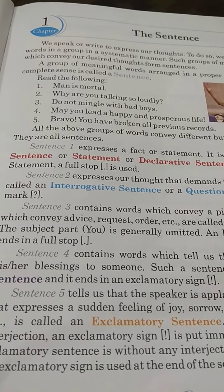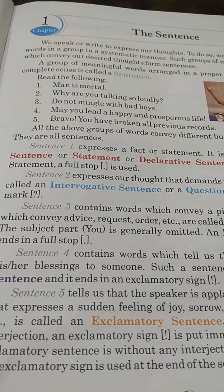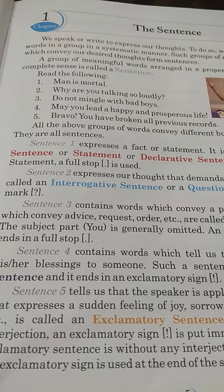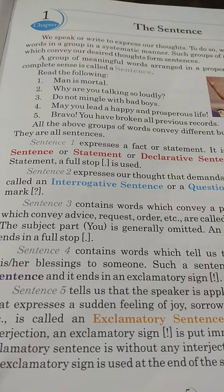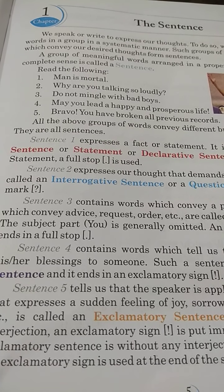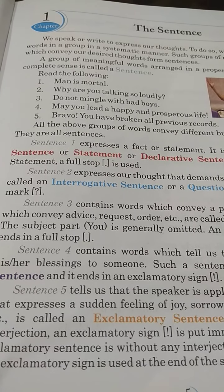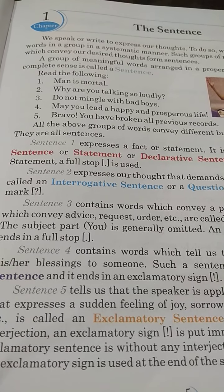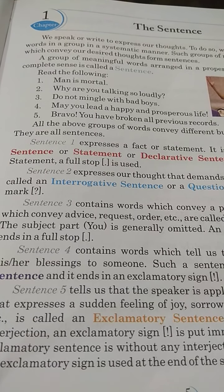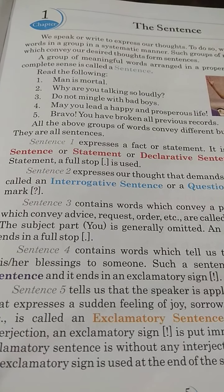Next: 'May you lead a happy and prosperous life.' Sentence type 4 contains words which tell us that the speaker is giving his or her blessings to someone. Such a sentence is called an optative sentence, and it ends in an exclamatory sign.